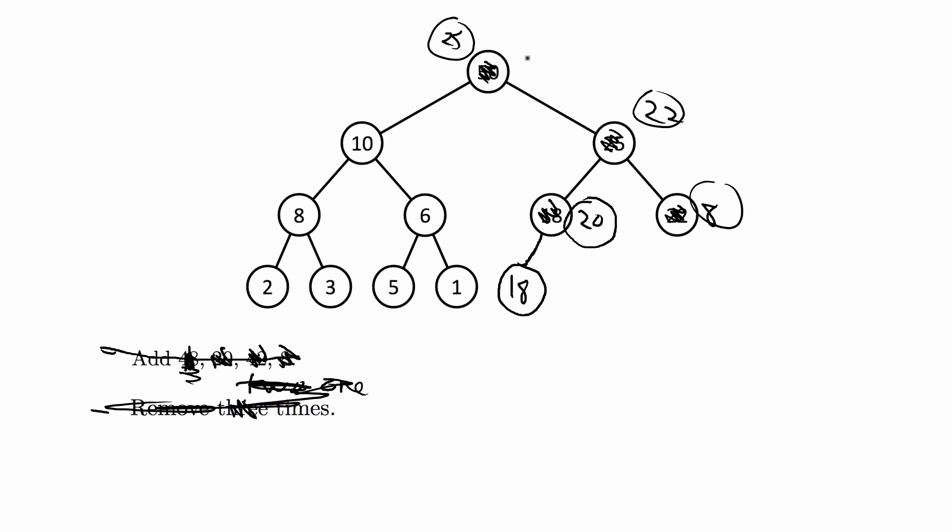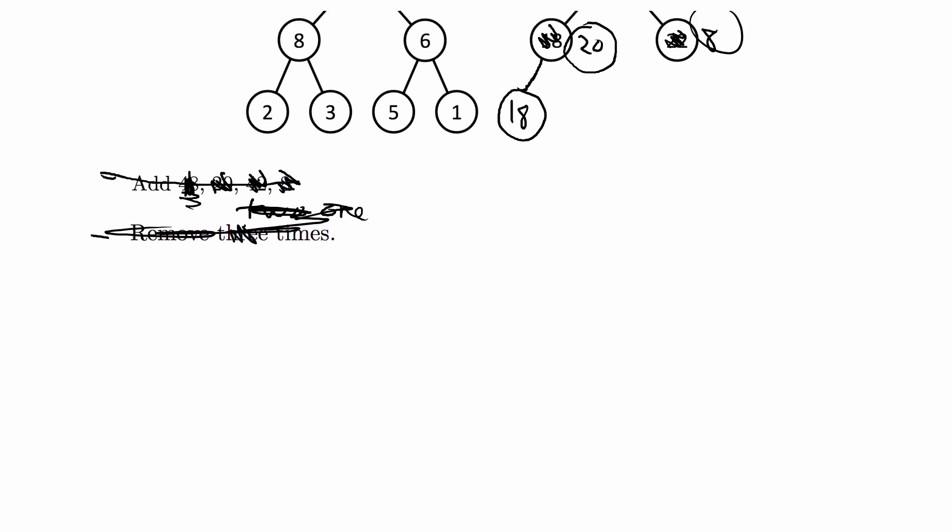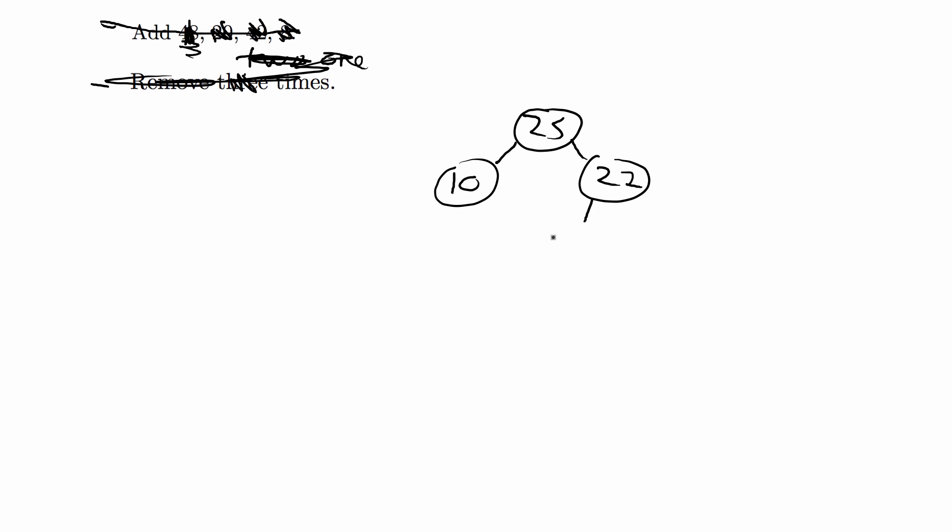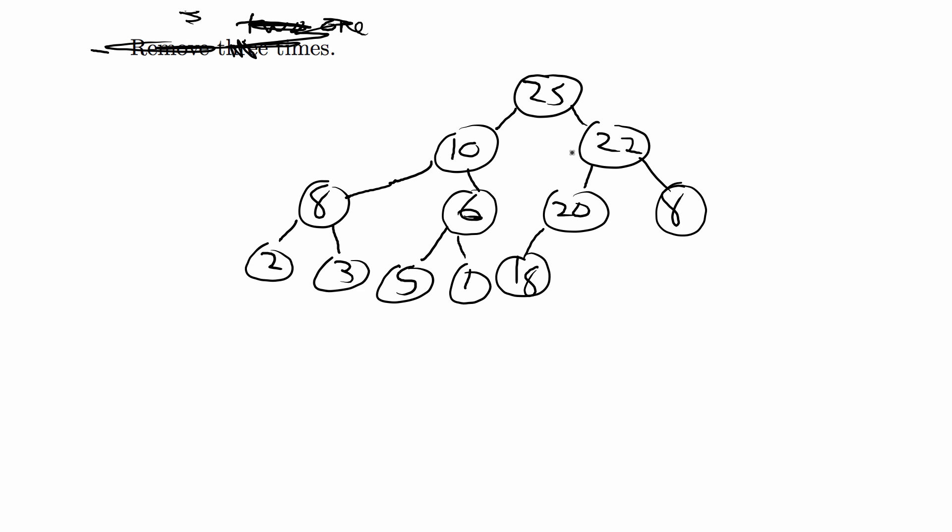And let me just write out what it would look like again. So it's going to be 25, 10, 22, then 8, 18. So this is an ugly drawing, but this is what the tree or the heap will look like after we've added four times and removed three times.